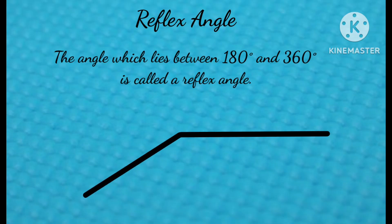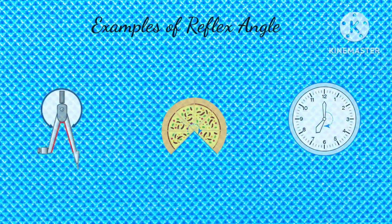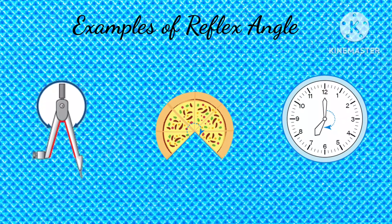An angle which lies between 180 degrees and 360 degrees is called a reflex angle. Here are a few examples of reflex angles.